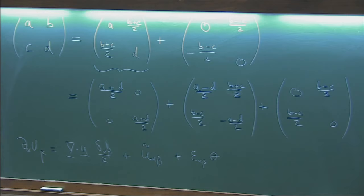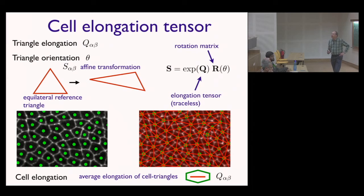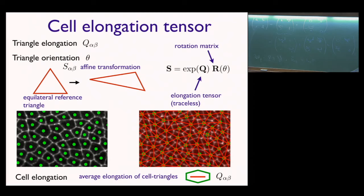In my segmentation of the cell mesh, I also have time information about subsequent frames. In addition to displacement, I also have time, so I can define the time derivative of the deformation. That's essentially the velocity gradient or deformation rate tensor, which can similarly be decomposed into the anisotropic part — the traceless symmetric part, pure shear — and the isotropic part, which is now the compression or growth rate. This is information about changes of state over time, the deformation rate of the material, of the polygons.